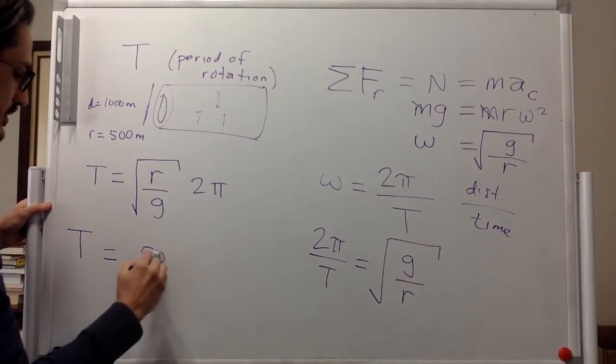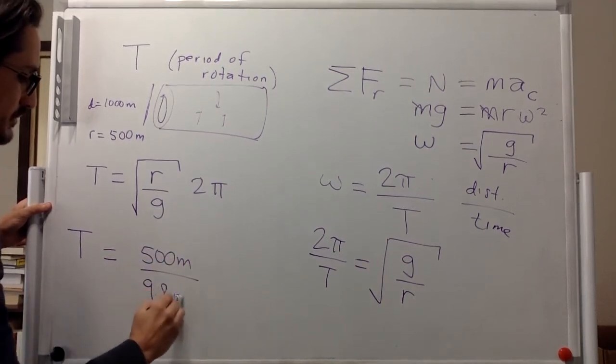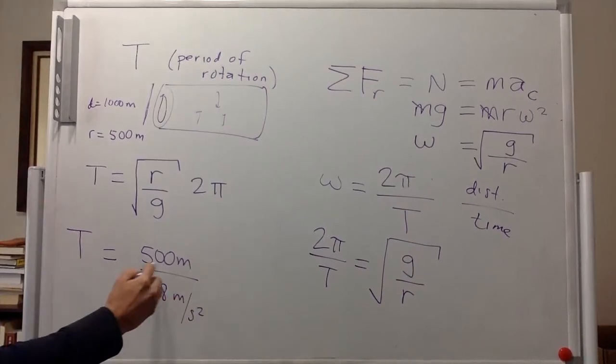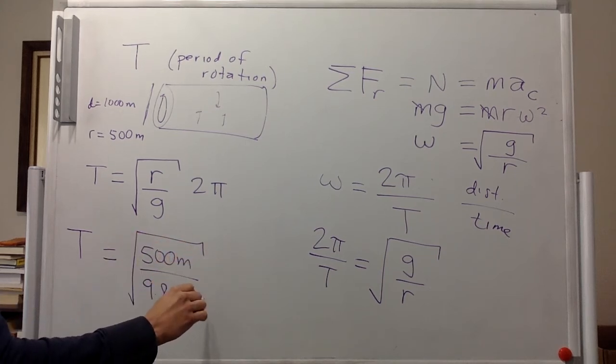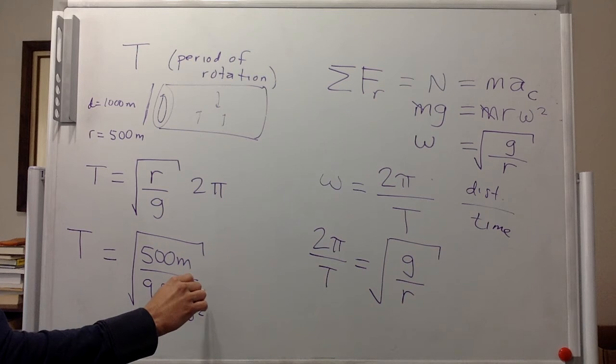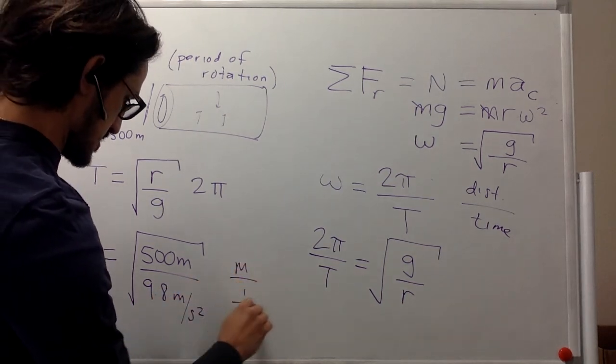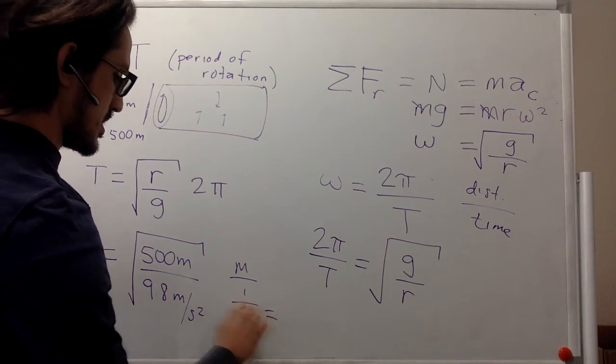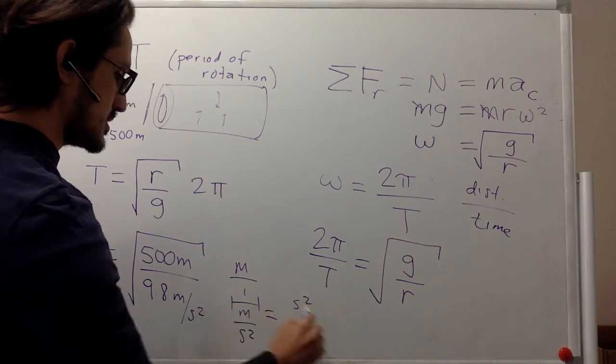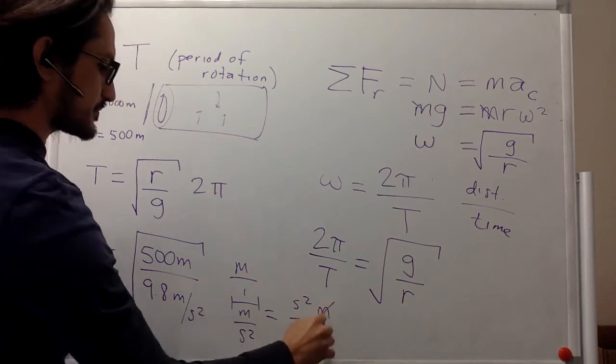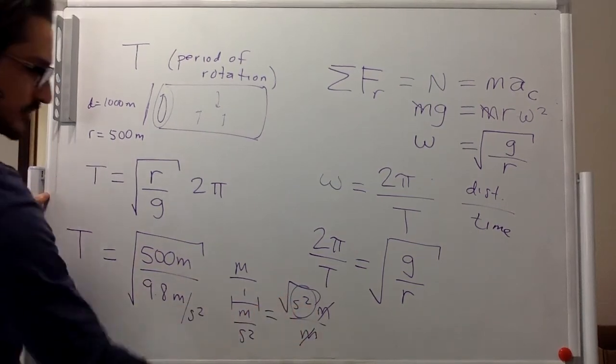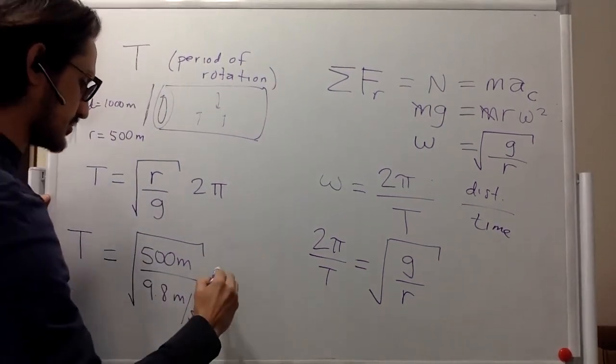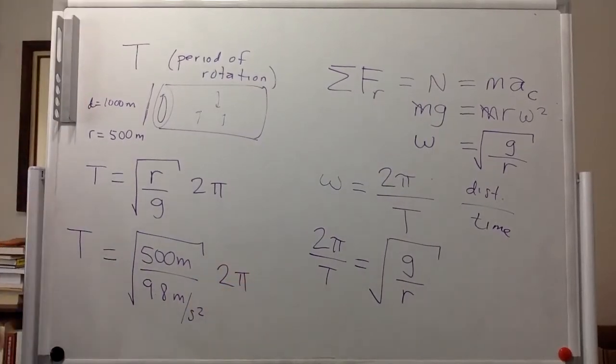So this will be 500 meters divided by 9.8 meters per second squared. So we get rid of the meters and we have second squared. Then we're going to take the square root of that. So these units are in seconds as we want them to be. And so we just put 2 pi over here. And we can just plug in the numbers now, do the calculation now.